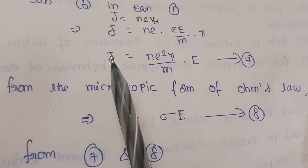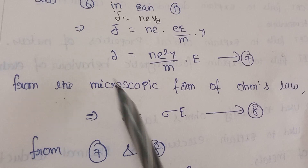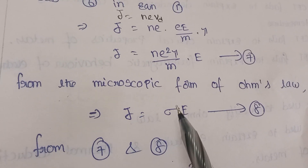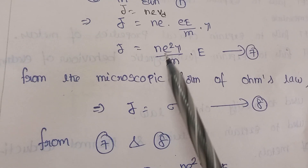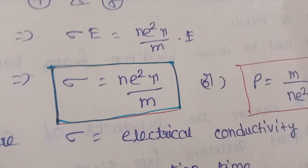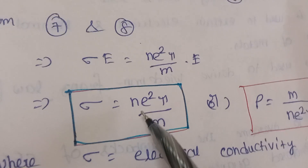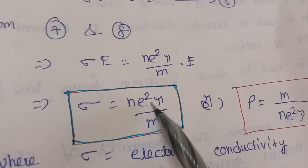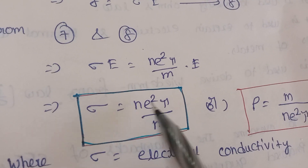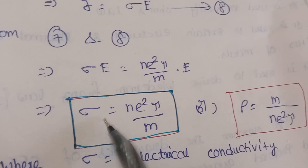Comparing j = (ne²τ/m) × E with j = σE, the two j's and E's match. Therefore, σ = ne²τ/m. This is the expression for electrical conductivity derived using classical free electron theory.